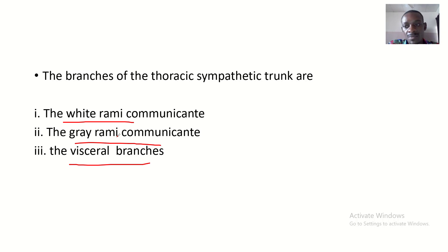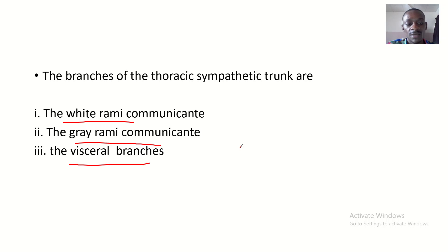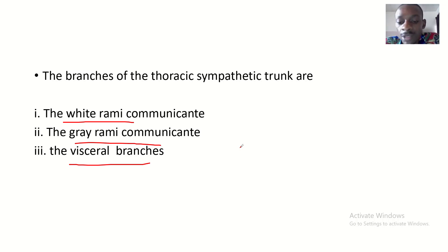Those are the branches of the thoracic sympathetic trunk: white rami communicantes, gray rami communicantes, and visceral branches. See you guys in the next tutorial. Bye for now.